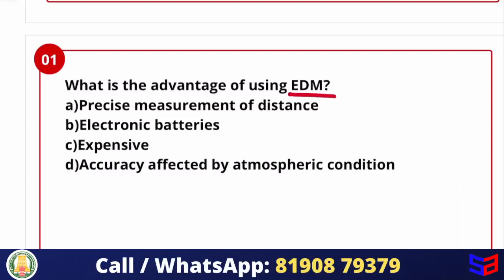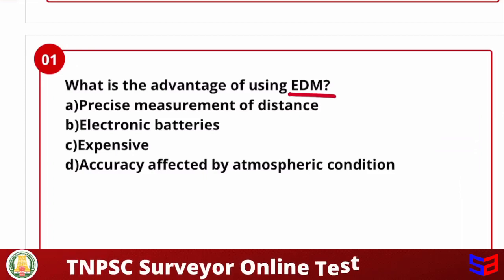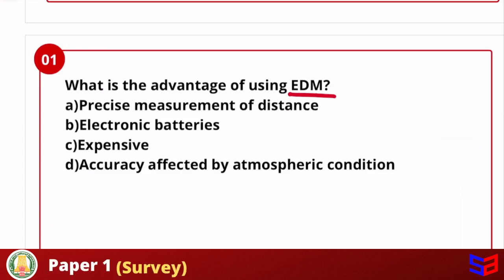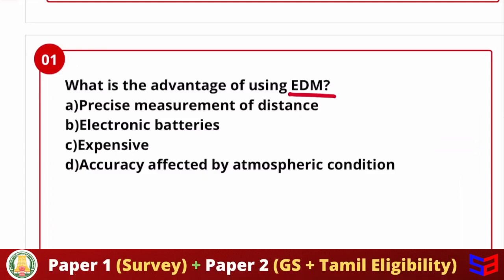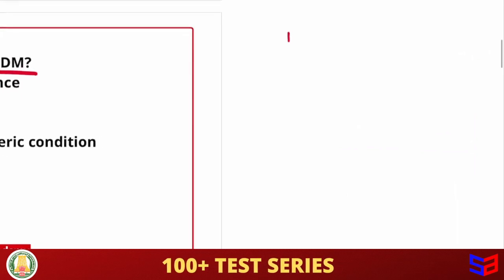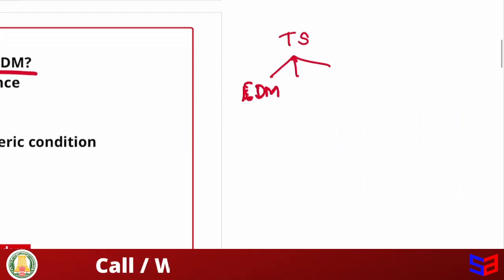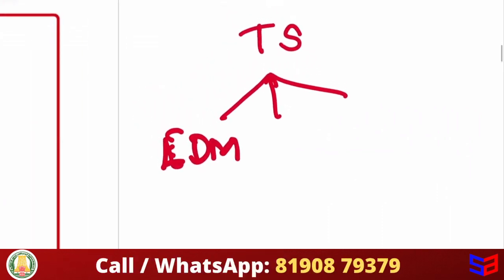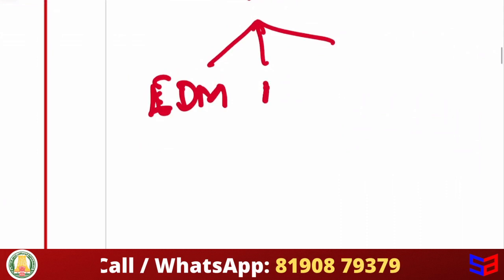Precise measurement of distance, electronic batteries, expensive, accuracy affected by atmospheric conditions. So this is the option. The answer is precise measurement of distance. That is correct. Usually in Total Station, we have a component, one of them is EDM. That is the distance measurement. That is the accurate measure. Along with that, we have electronic theodolite.